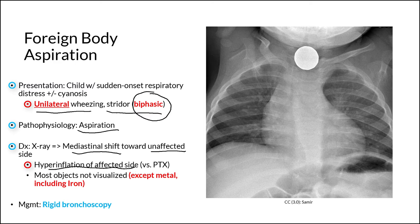This is in contrast to patients with a pneumothorax, where we classically see deflation of the affected side. It should be noted that in most cases of foreign body aspiration in children, most objects cannot actually be visualized. Notable exceptions include metals, including iron, and therefore one classic case of foreign body aspiration is the ingestion of iron tablets, which are radiopaque and visible on X-ray.